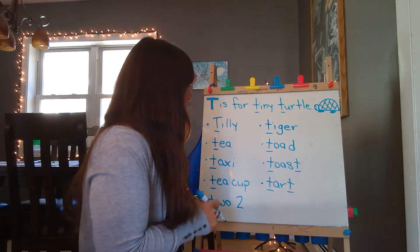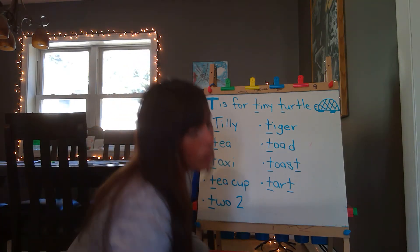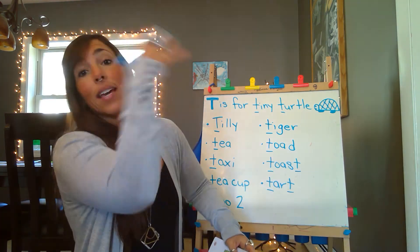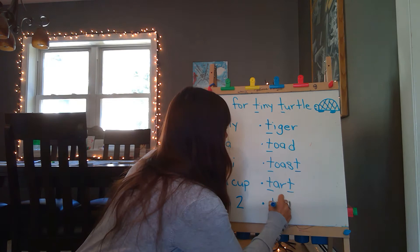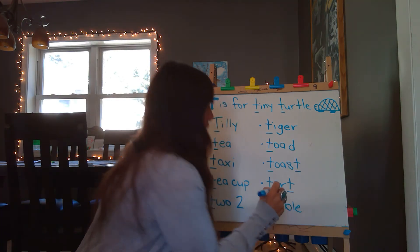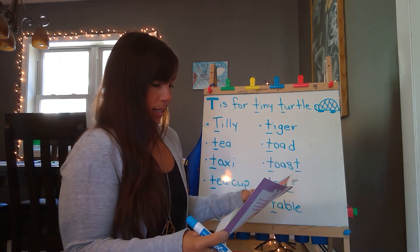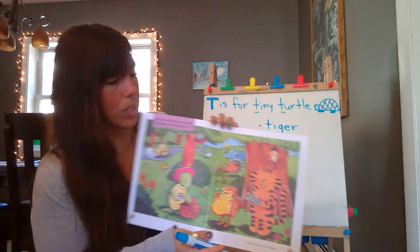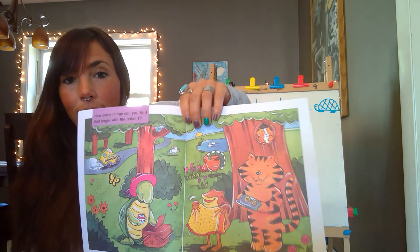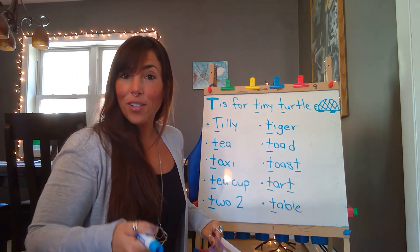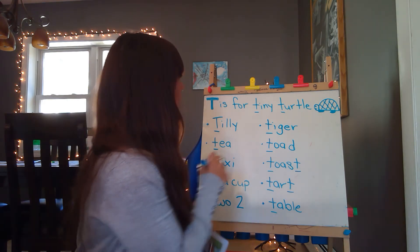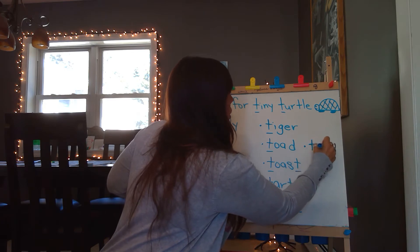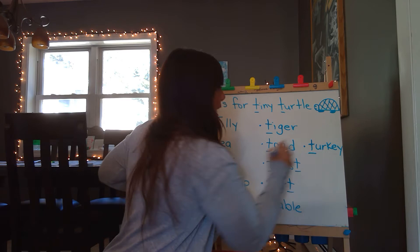Shall we look one more time? The table — the table tipped. So, table. Let's see what else we've got here. We got the taxi, the toad, the tiger. What's this guy? Turkey! You guys are a bunch of turkeys. I'll try to squeeze it right here — turkey. Turkey lurkeys.